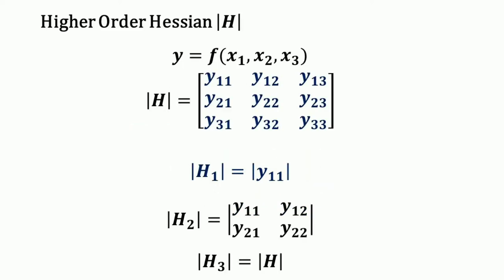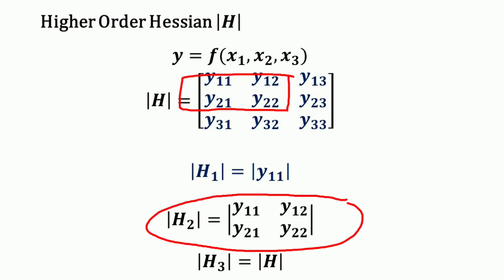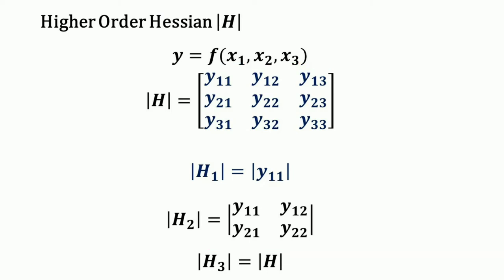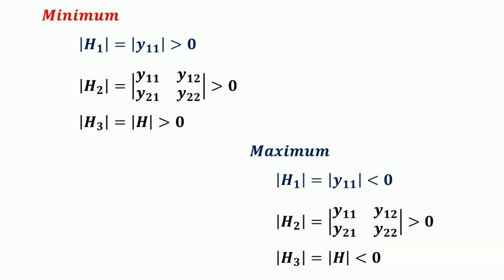The first principal minor is h1, which is equal to the first element y11; h2 is the second principal minor; and h3 is the third principal minor, which is equal to h (the full determinant).